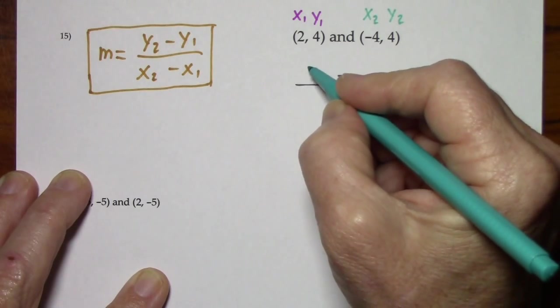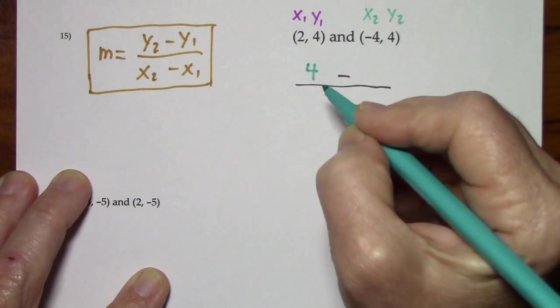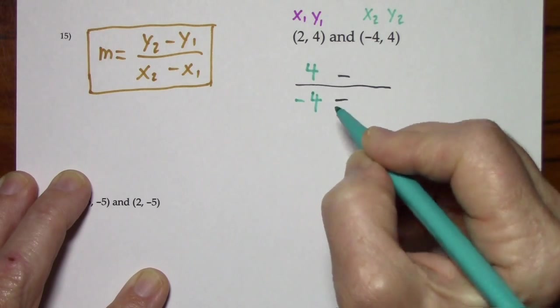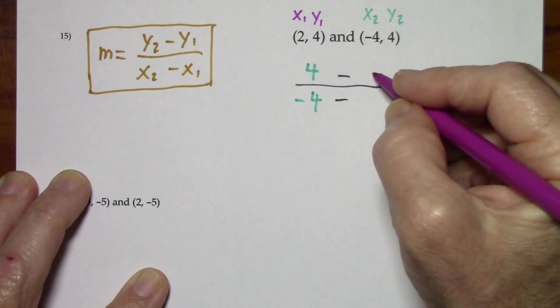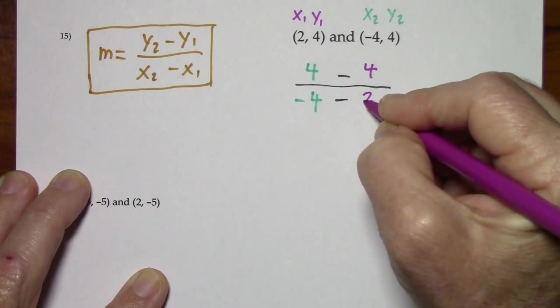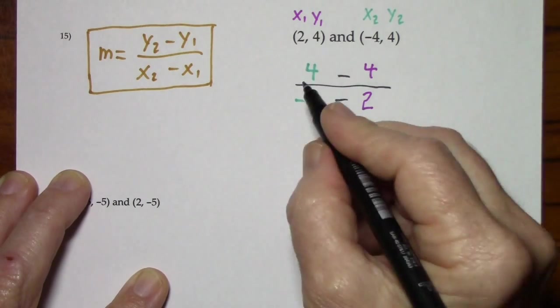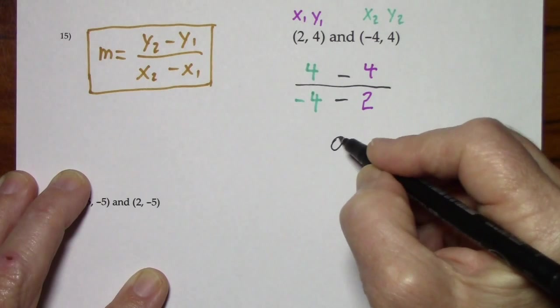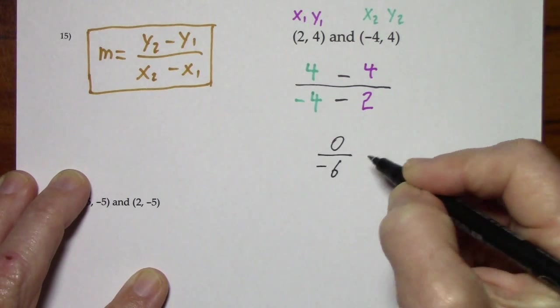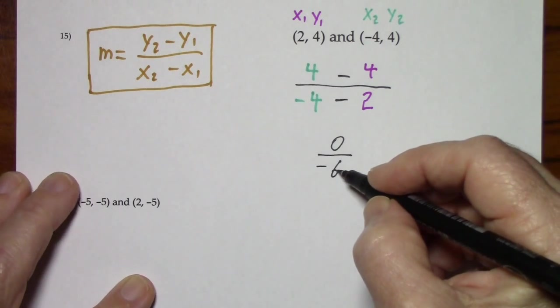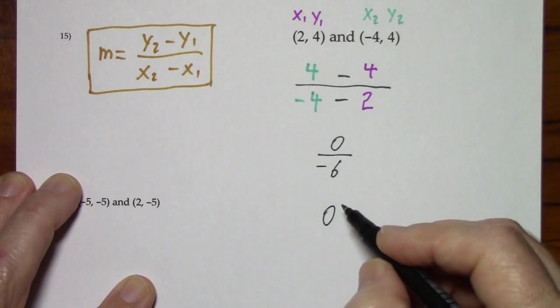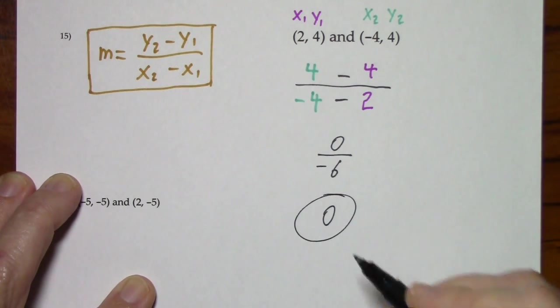So y sub 2, x sub 2, y sub 1, x sub 1. The numerator gives us 0. The denominator, negative 6. 0 over anything is 0. So the slope is 0.